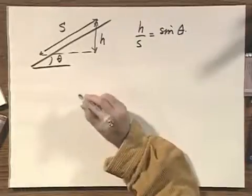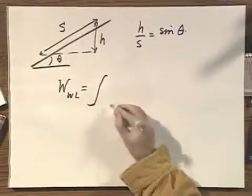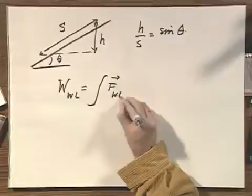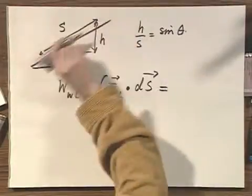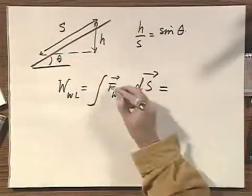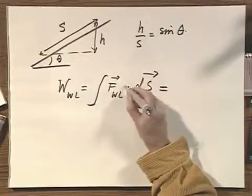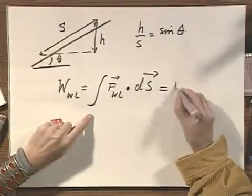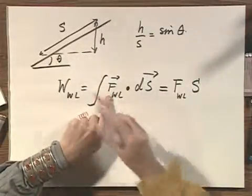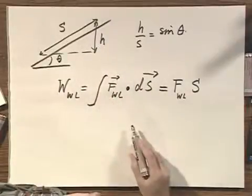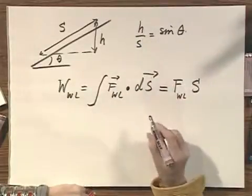The work that I would have to do is the integral from where I begin to where I end of the force by Walter Lewin with a dot product of ds. In this case, the force and ds are in the same direction, and the force is constant. And since they are in the same direction, I can leave the dot off. So I can immediately replace this by the force of Walter Lewin times the whole displacement s. Since the force is not changing as a function of s, it is simply this product. Well, what is s? s is h divided by sine theta.